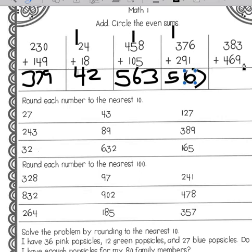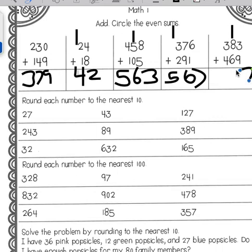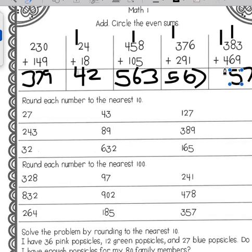We have nine plus three is twelve. Eight plus one is nine, plus six would be ten, eleven, twelve, thirteen, fourteen, fifteen. And then three plus one is four, plus four would be eight.